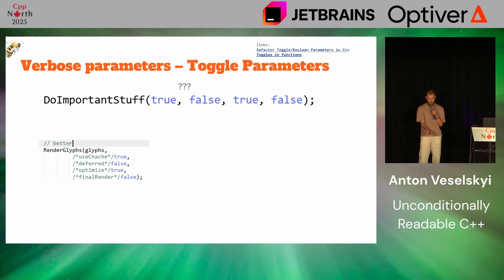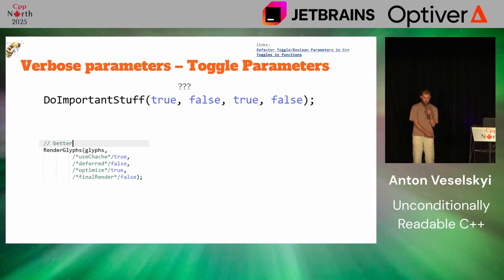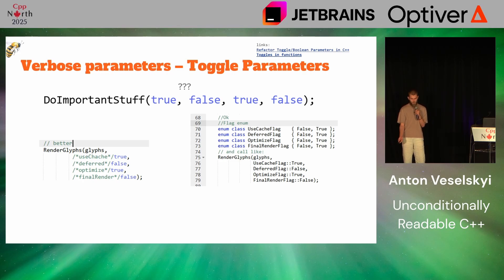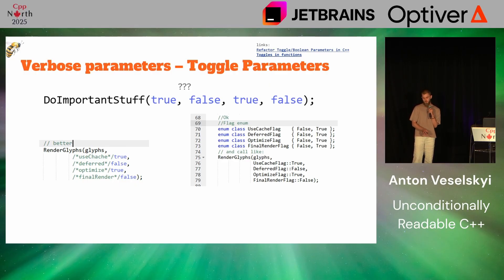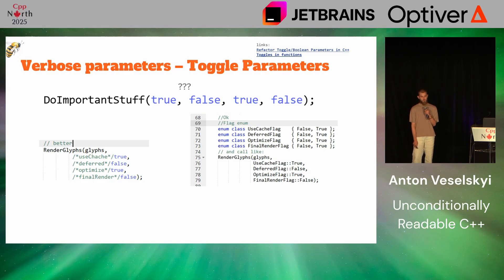If you don't have access to the code and you're just a user of the library, the least you can do is document what the parameters mean — but that pushes responsibility onto you as a user. If it's your function, there's better stuff you can do. You can introduce an enum to represent each of your boolean parameters. Even if it has the same values as false and true, it's still better because it forces users of your code to verbosely say 'use cache flag true,' which is self-documenting and embedded in the design.